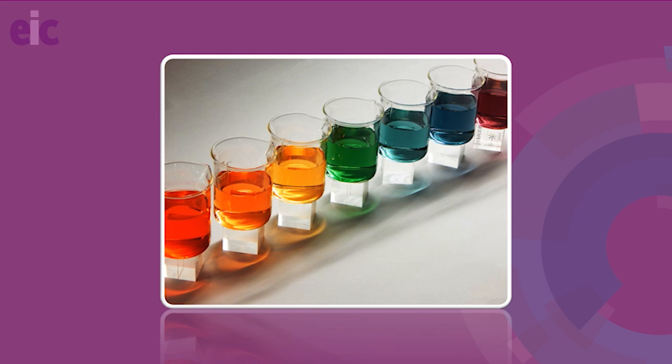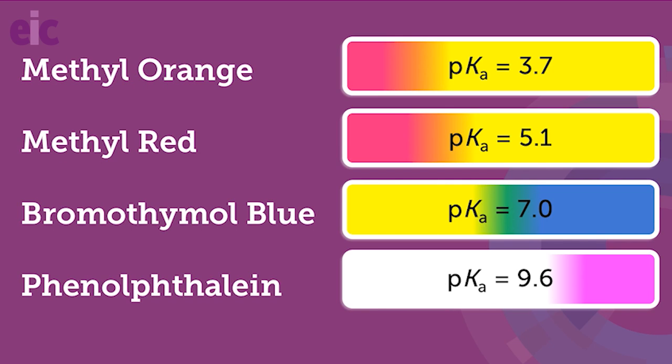Universal indicator solution is a mixture of a number of indicators, each existing in one of two coloured forms. A possible way of making such a mixture includes the indicators methyl orange, methyl red, bromothymol blue, and phenolphthalein.